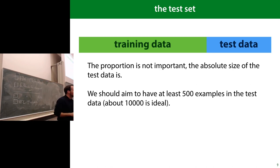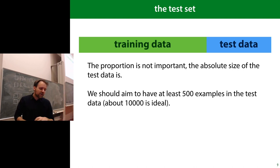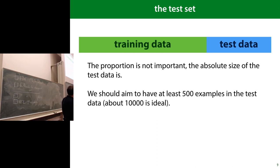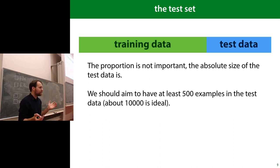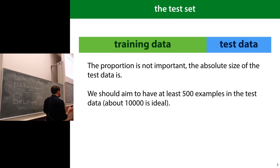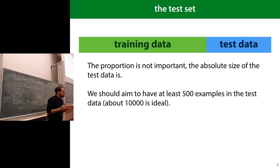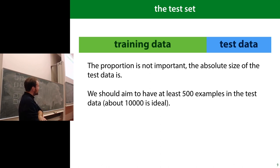A little more detail about separating training and test data: don't focus on the proportion — don't just go for an 80-20 split. Look at the size of your test data; that's the important part. It should be at least 500 instances, but the ideal to shoot for is 10,000 instances. Whatever you have left over, use as training data. 10,000 can become expensive if it leaves you with very little training data, so you have to find a balance — but a big test data set can be very important.